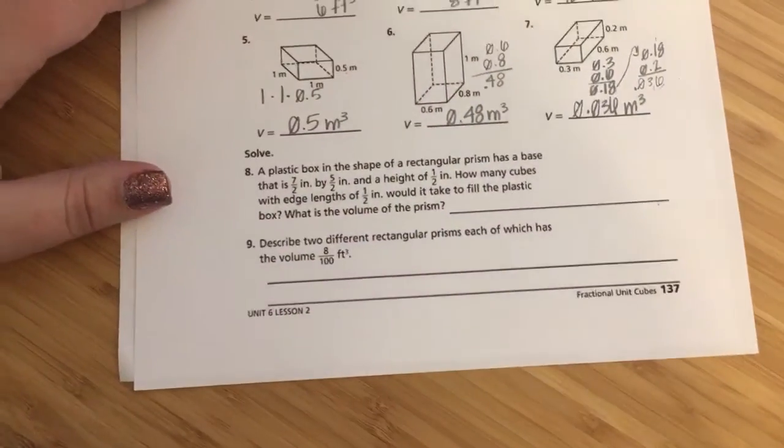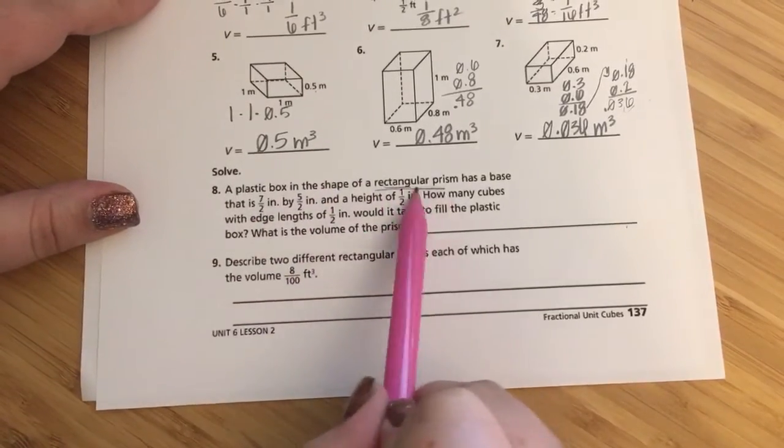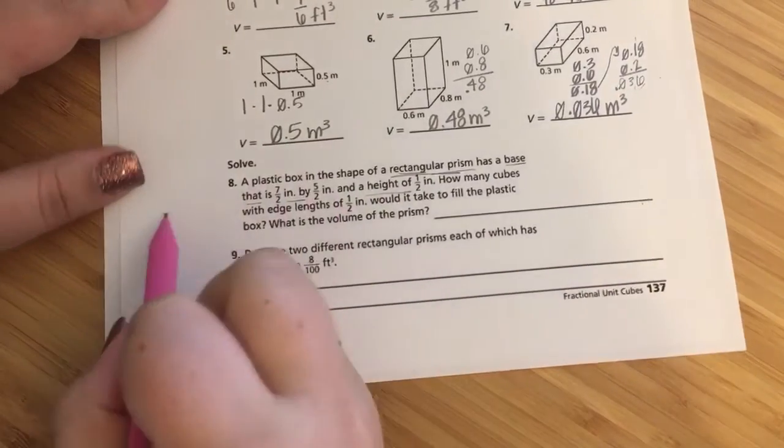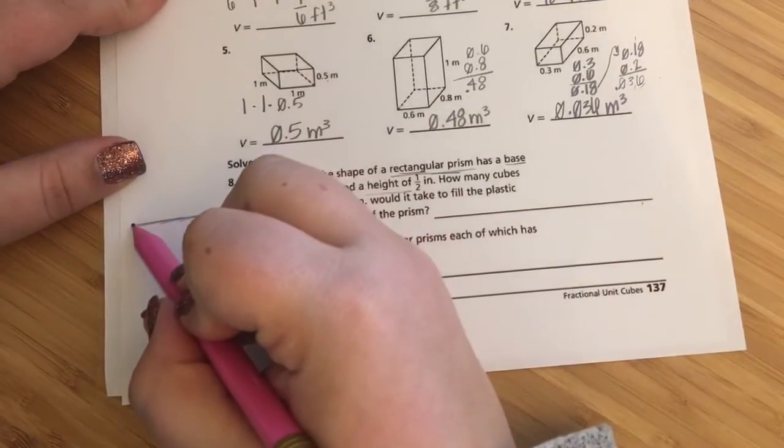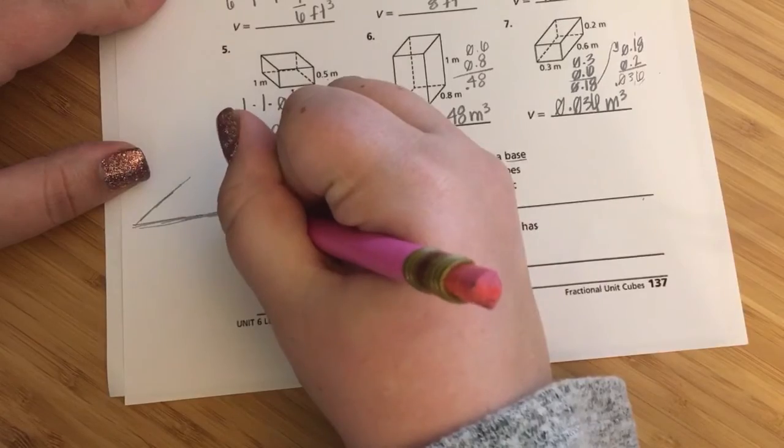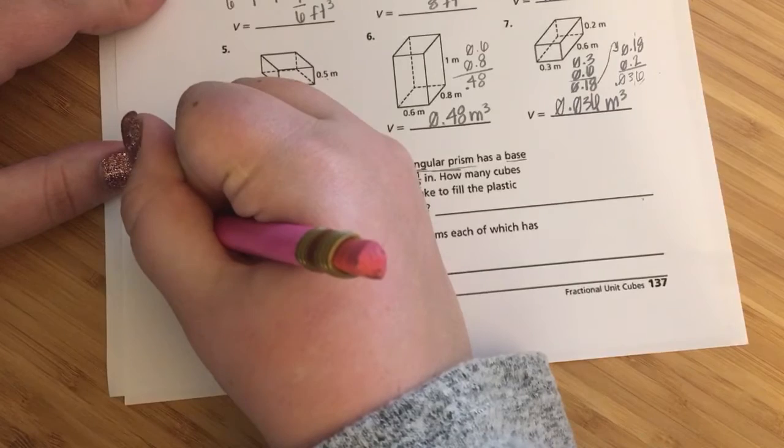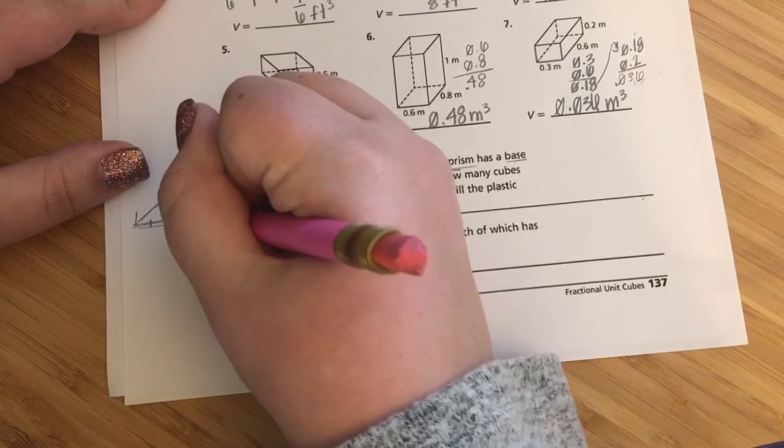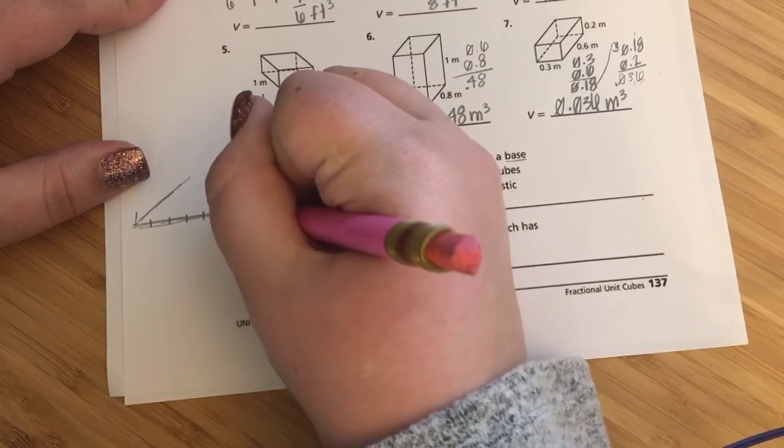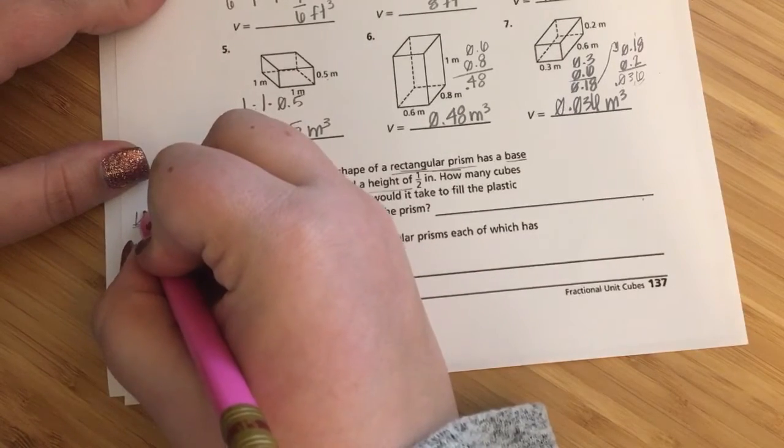A plastic box in the shape of a rectangular prism has a base that is 7 over 2 inches by 5 over 2 inches and a height of 1 half inch. How many cubes with edge lengths of 1 half inch would it take to fill the plastic box? I'm a visual person, so I will almost always draw a picture just so I can see it. This will also help me with these crazy lengths of like 5 over 2 and 7 over 2. So, I know my height is half of an inch, which is not very tall.